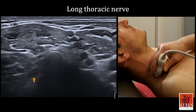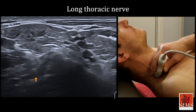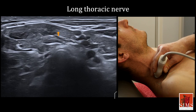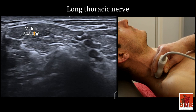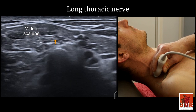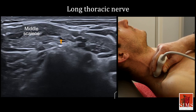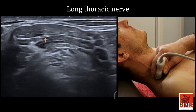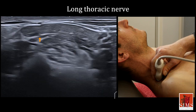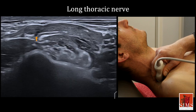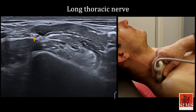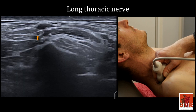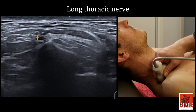The long thoracic nerve, which originates from the C5 to C8 roots, has a remarkable anatomical relationship with the middle scalene. It gives rise to bundles that perforate the middle scalene. At the exit, they regroup to give rise to the long thoracic nerve, which innervates the anterior serratus.